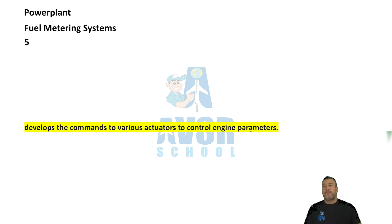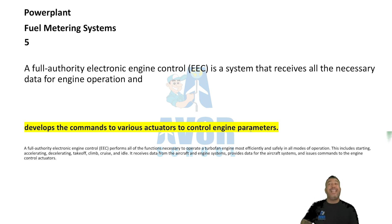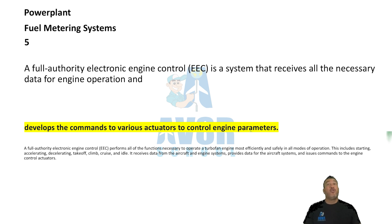Number five: develops the commands to various actuators to control engine parameters. A full authority electronic engine control — a full authority EEC — is a system that receives all necessary data for engine operations and develops the commands to various actuators to control engine parameters.